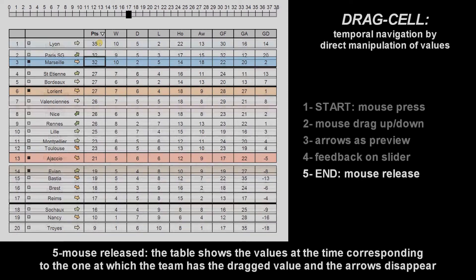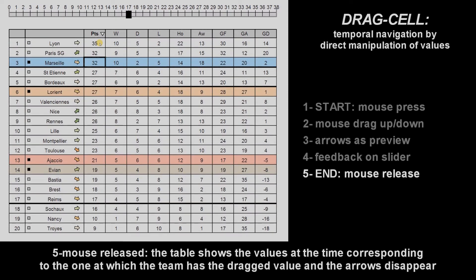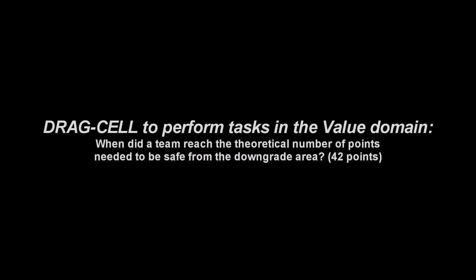When releasing the mouse, the table changes to the time at which the team has the selected value. The arrows disappear. For example, let's answer the following common question addressed by soccer analysts: when did a team reach the theoretical number of points, 42, to be safe from being downgraded to the minor league?